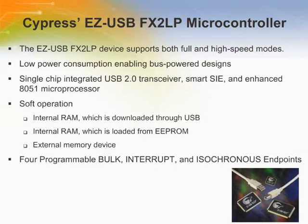The EZUSB FX2 LP is a power-efficient, high-speed USB 2.0 controller. USB peripherals using the EZUSB FX2 LP controller include mass storage devices and personal media players, and are able to operate off the power of the USB bus. Featuring a data rate of 480 megabits per second, 16K bytes of on-chip memory, and up to 40 programmable IOs, the EZUSB FX2 LP solution provides design flexibility. By integrating the USB 2.0 transceiver, serial interface engine SIE, enhanced 8051 microcontroller, and a programmable peripheral interface in a single chip, this solution provides superior time-to-market advantages with low power to enable bus-powered applications.